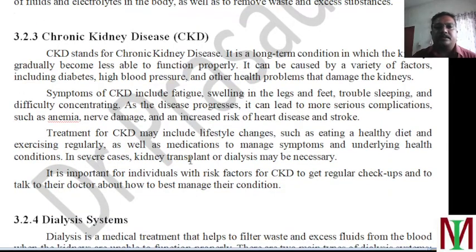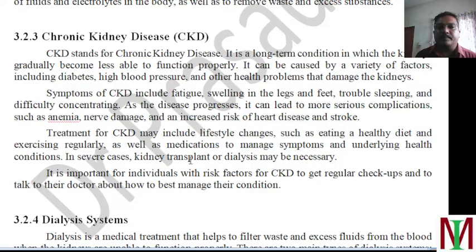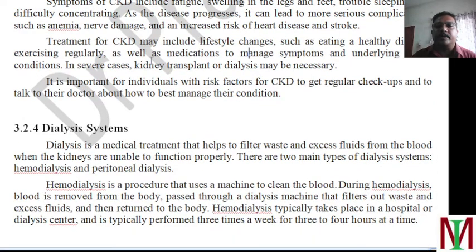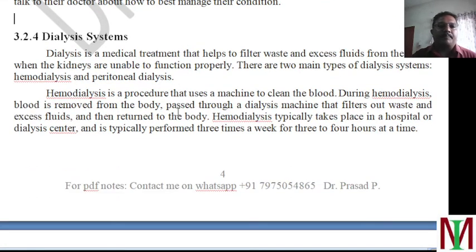Then chronic kidney disease — this refers to diseases which happen related to the kidney. Symptoms include fatigue, swelling in legs and feet, trouble sleeping, and difficulty in concentrating. As it continues, it becomes serious with complications such as anemia, nerve damage, and even causes a heart attack or stroke. Treatment includes maintaining a healthy diet — you have to control your food system, and if you control everything, we can keep our kidney healthy. If anything happens to the kidney system and the purification system is not done properly, then it has to be done externally by a process known as dialysis.